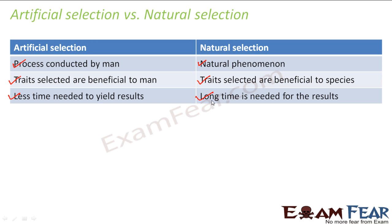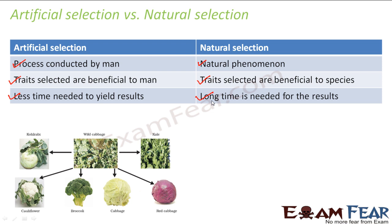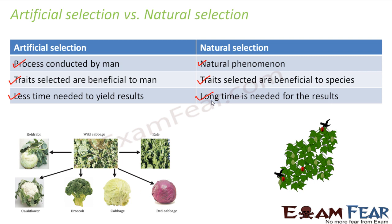Natural selection takes its own time — for example, the population of green beetles did not increase all of a sudden; the beetles reproduced and gradually their numbers increased. But in case of artificial selection, since it is under the control of man, they just crossbreed things and results come up very quick and fast. So this was all about evolution by stages. The example of artificial selection is obtaining different types of plants from the same plant; for natural selection, the green beetles and red beetles are the best examples.